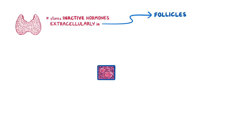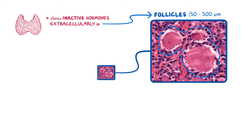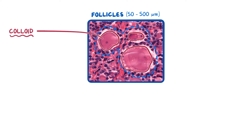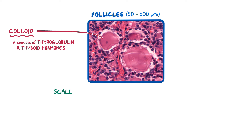The thyroid gland is unique because it's the only endocrine gland that stores its inactive hormones extracellularly in follicles. The follicles can vary in size quite a lot, from 50 to 500 micrometers. Each follicle is filled with a gel-like mass called colloid, which stains dark pink with H&E. The colloid consists mostly of thyroglobulin and thyroid hormones bound to the colloid. Some follicles have colloid with a scalloped pale edge.